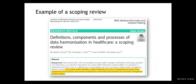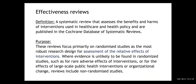Here's an example of a scoping review we conducted, published last year. The aim was to identify definitions of data harmonization in healthcare settings specifically, to find out about the activities, components, or processes that relate to data harmonization, and to see whether there was any literature published on the relationship between data harmonization and health management decision making.